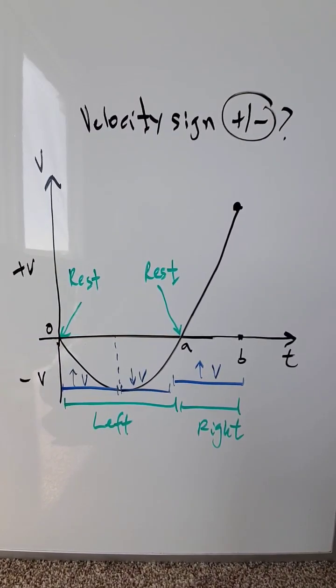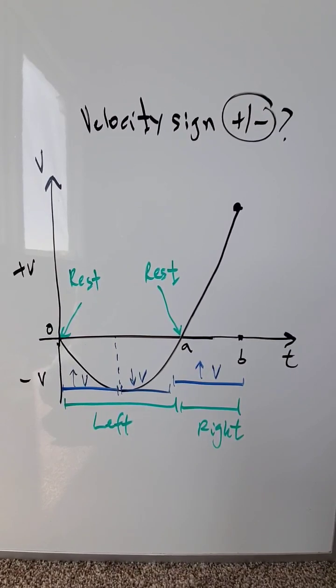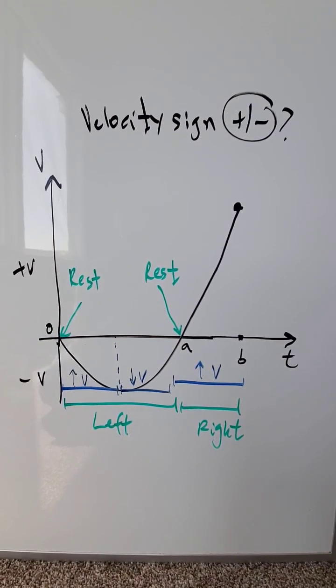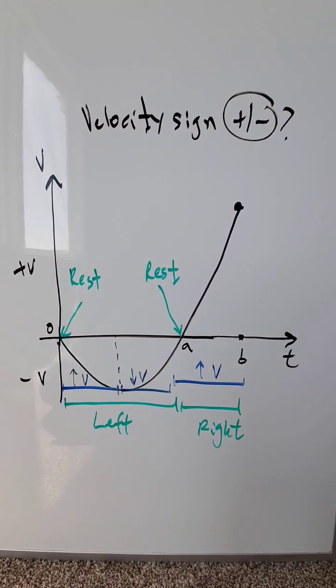Students generally get confused about the sign of velocity. It can be positive or negative. What does that mean? By convention, when the velocity sign is negative, your object is moving towards the left. If the velocity sign is positive, your object is moving towards the right.